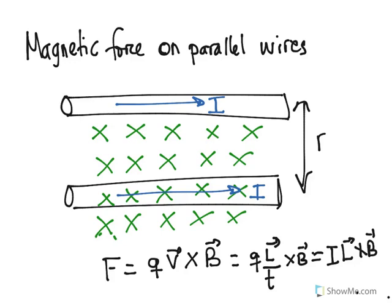If the second current is going in the same direction, with the right-hand rule, you point your index towards I.